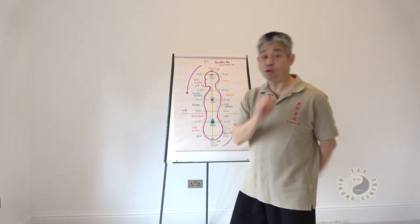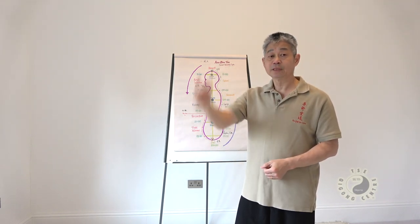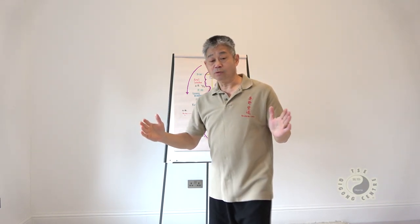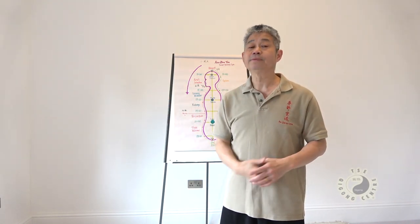小周天 means 小 means small. 周 means cycle. One week is a 周. One week and the second week is two 周, three 周. That's 周.